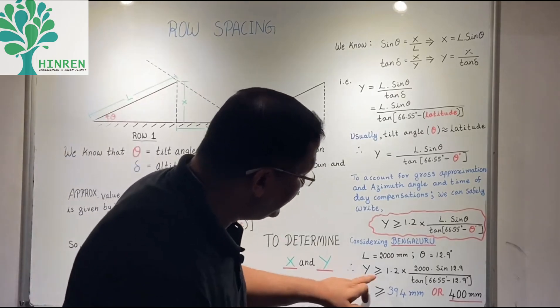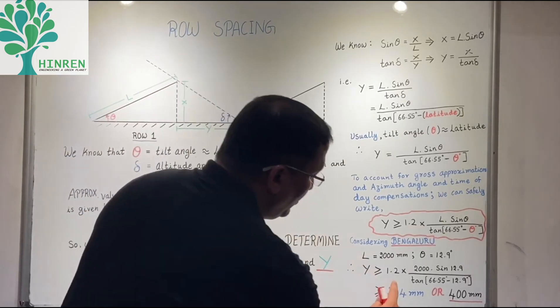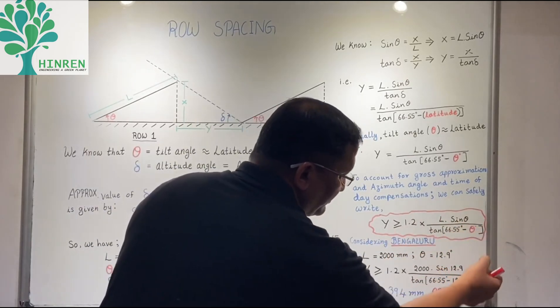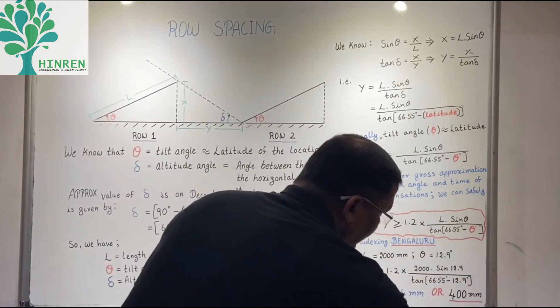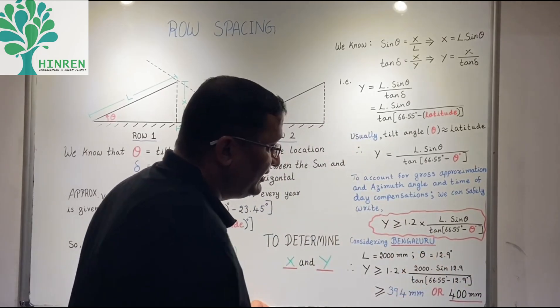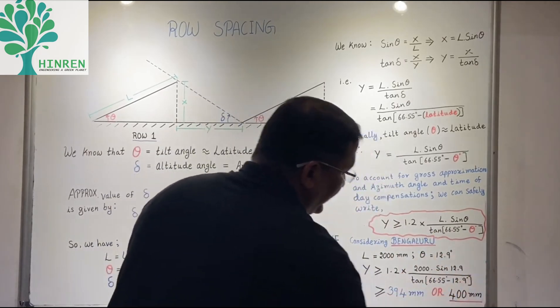Y should be greater than or equal to 1.2 times l, which is 2000 mm, times sine of the latitude, sine of 12.9, divided by tan of 66.55 minus the latitude 12.9.